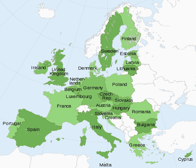In 1957, six core states founded the EU's predecessor, the European Economic Community: Belgium, France, Italy, Luxembourg, the Netherlands and West Germany. The remaining states have acceded in subsequent enlargements.